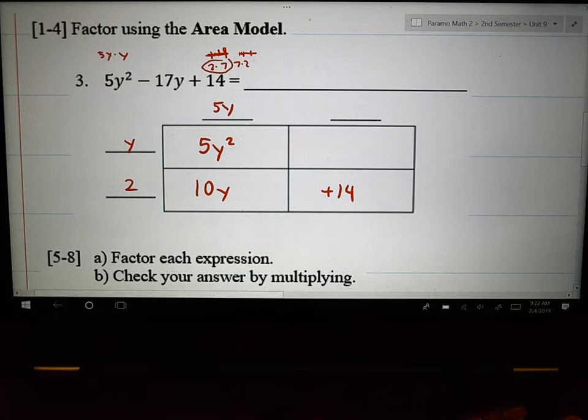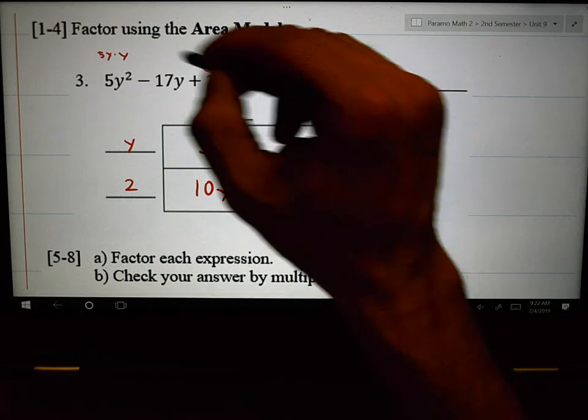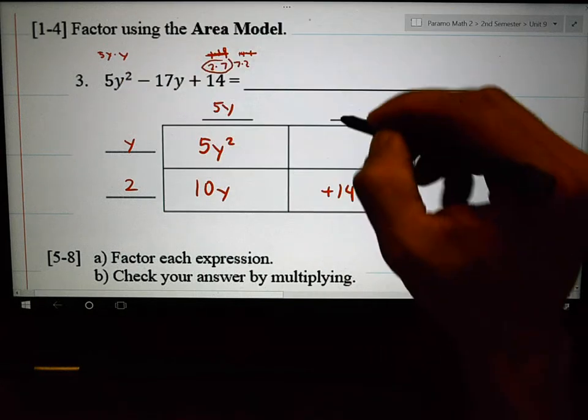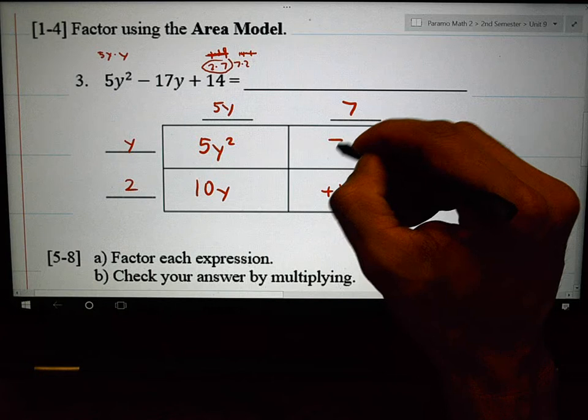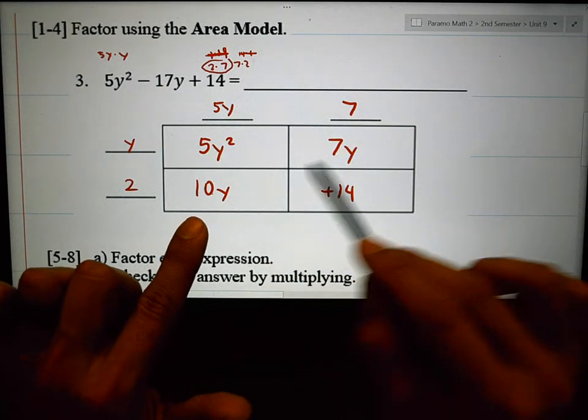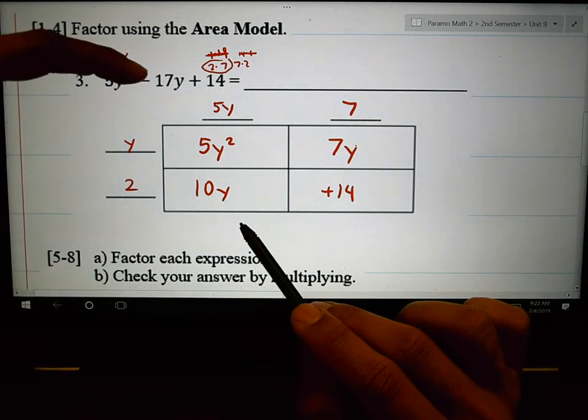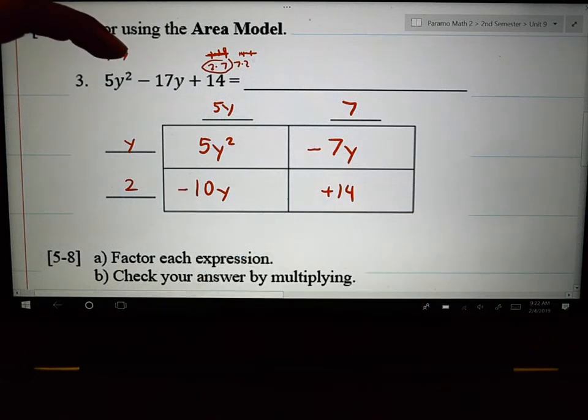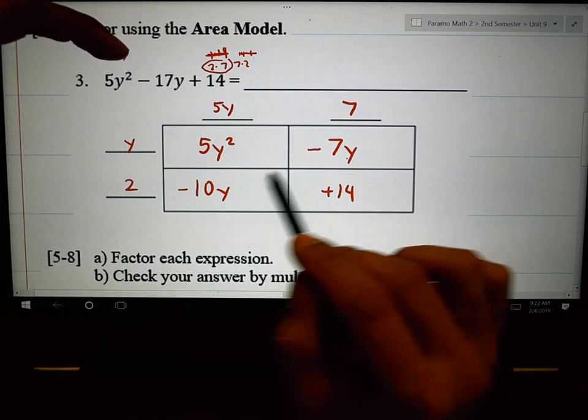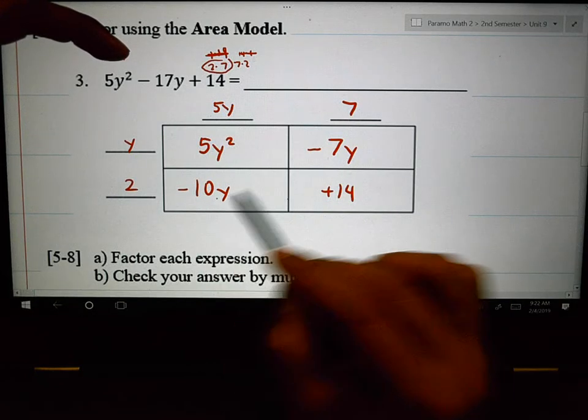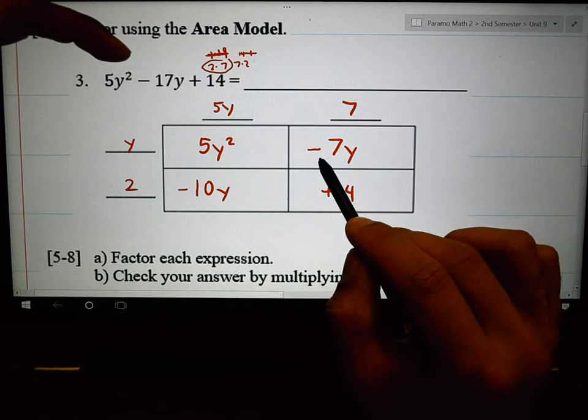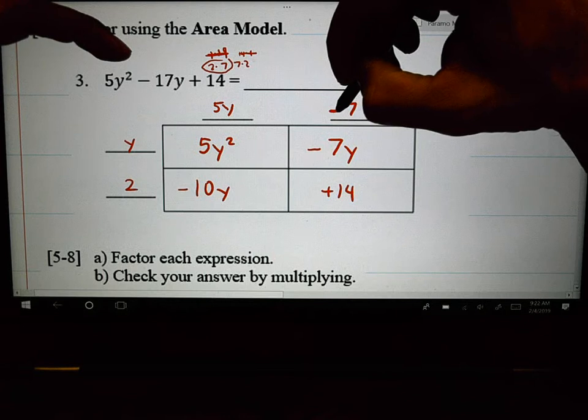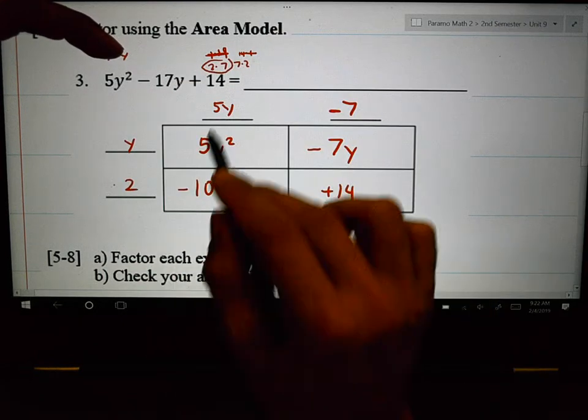So, if I have that 10y, and I use the 5 times the 2, 5 times the 2. Now, I need the y times the 7. The only way that these two things will add to be that negative 17 is if this was a negative and this was a negative. If I had a negative 7y and a negative 10y, that would add to negative 17. So, the only way that would happen is if this 7 was a negative and this 2 was a negative.